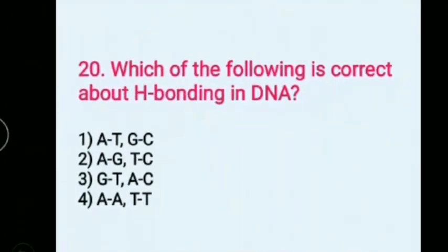Which one of the following is correct about H bonding in DNA? Options: 1) A-T, G-C, 2) A-G, T-C, 3) G-T, A-C, 4) A-T, T. Answer: 1) A-T, G-C.